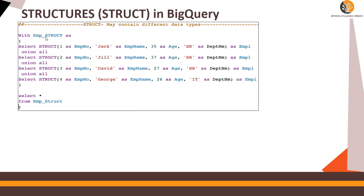Here what you are seeing is employee_struct, my width subtable. The keyword is STRUCT. STRUCT one has employee number, Jack as employee name, age, and department. Note that you have different data types and different columns, unioning them all as EMPL.